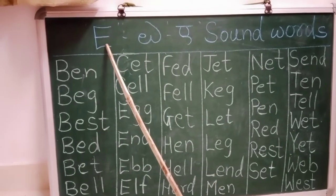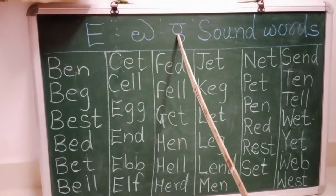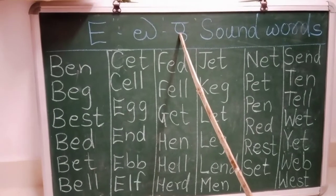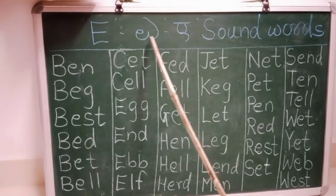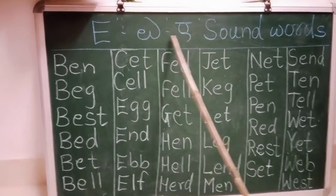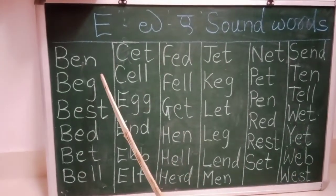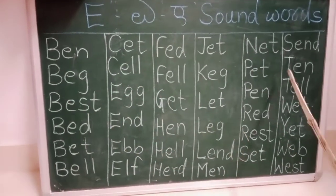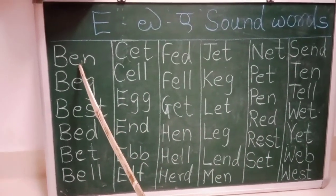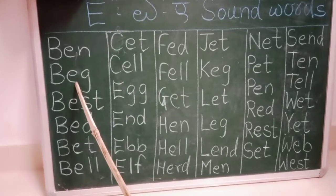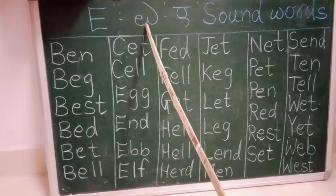What is the sound of E? It is A. We are going to learn today A sound words. In all words, there is the letter E and the E's sound is A.